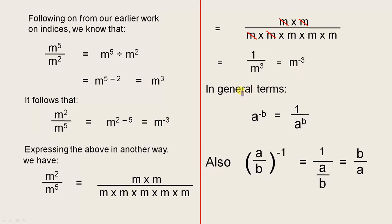So in general terms, that means it doesn't matter what letters we have or what numbers. If we have a to the minus b, that is any base to a negative power, that's 1 over the same base to a positive power. You just write it 1 over, and you change the sign of the base. If we have a fraction to the power of minus 1, that's 1 over a over b, which is actually b over a.